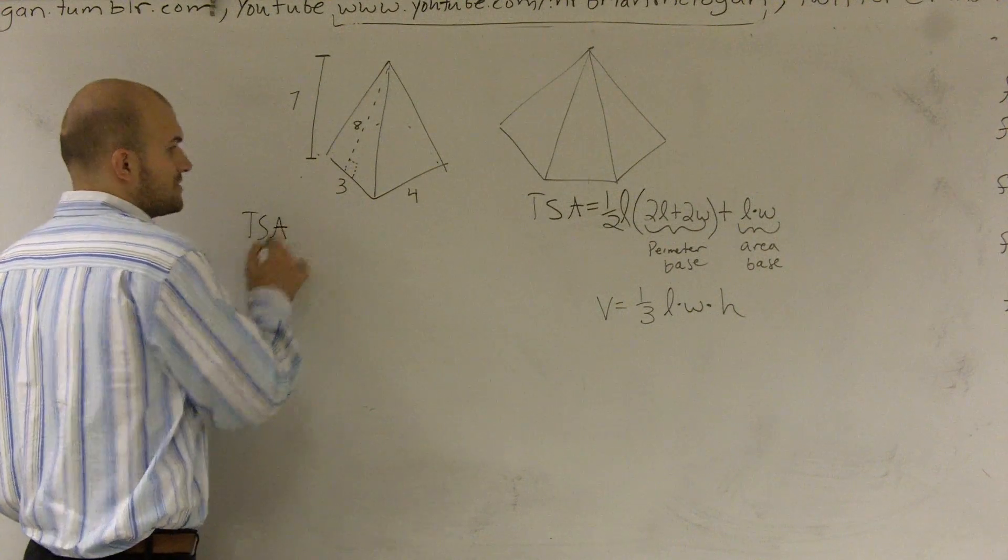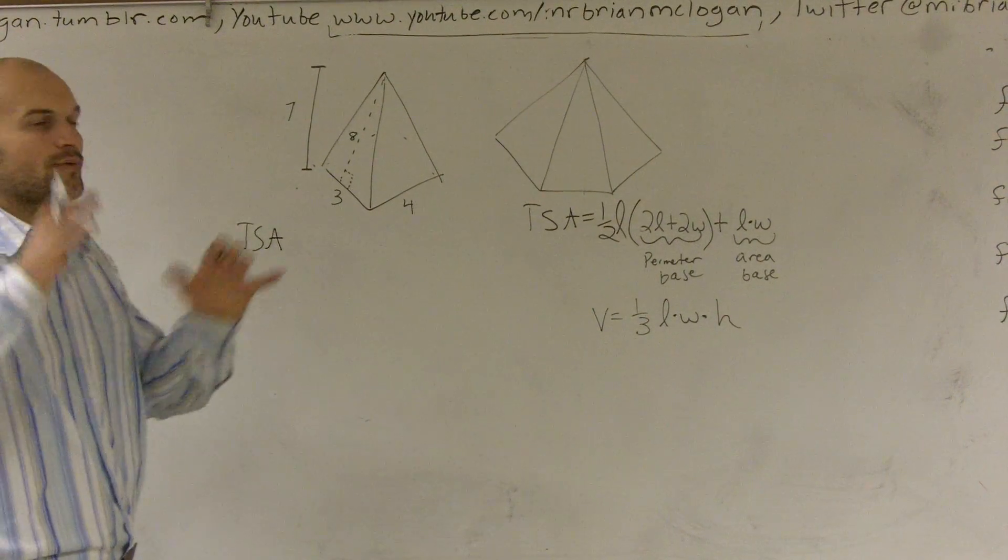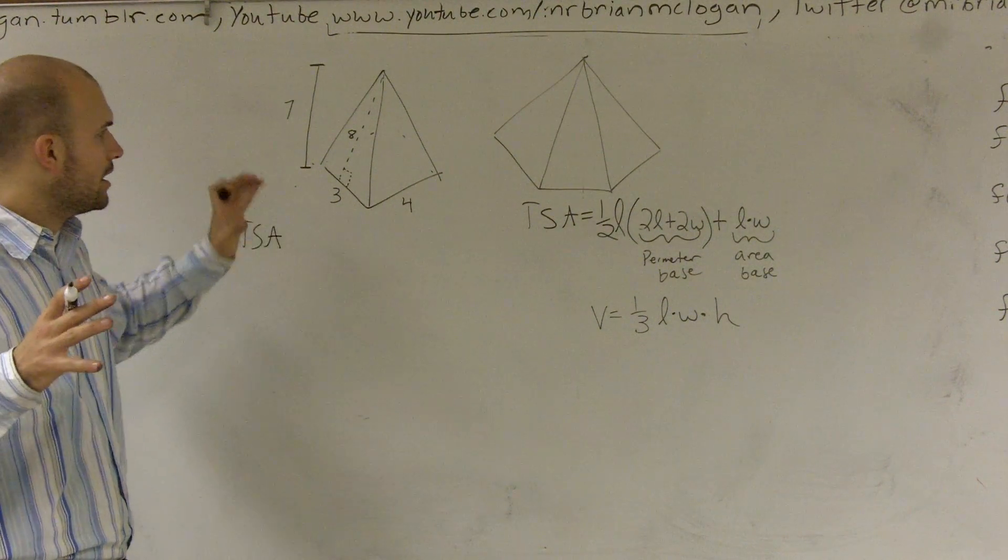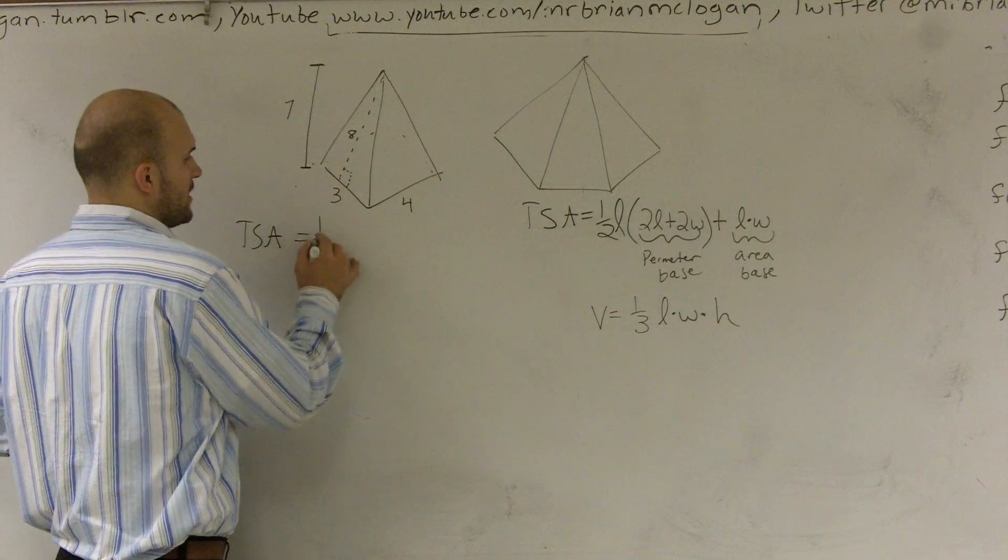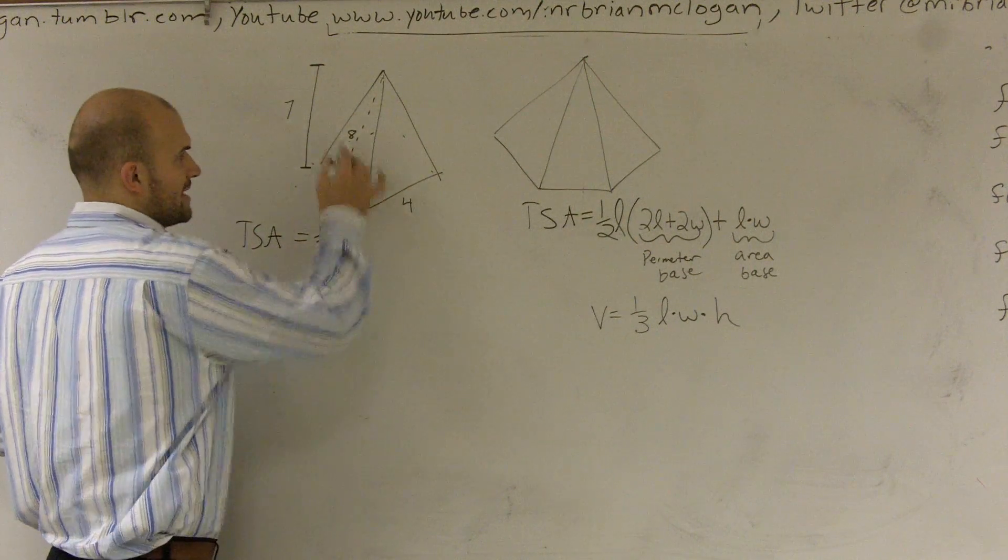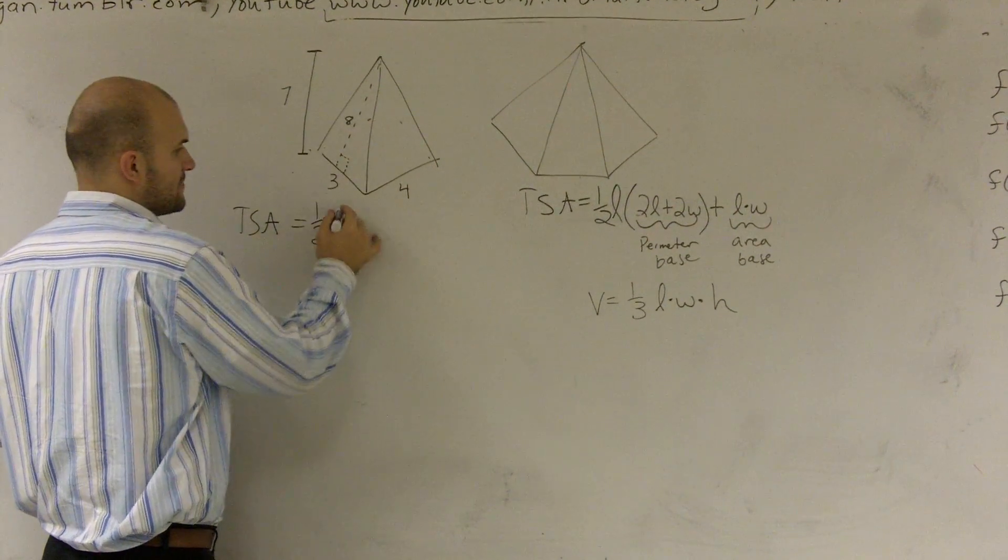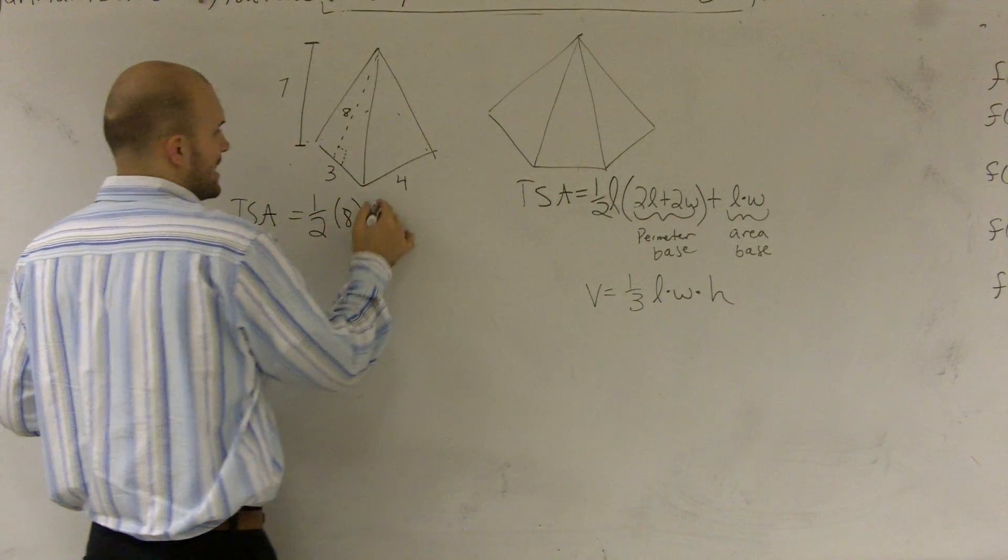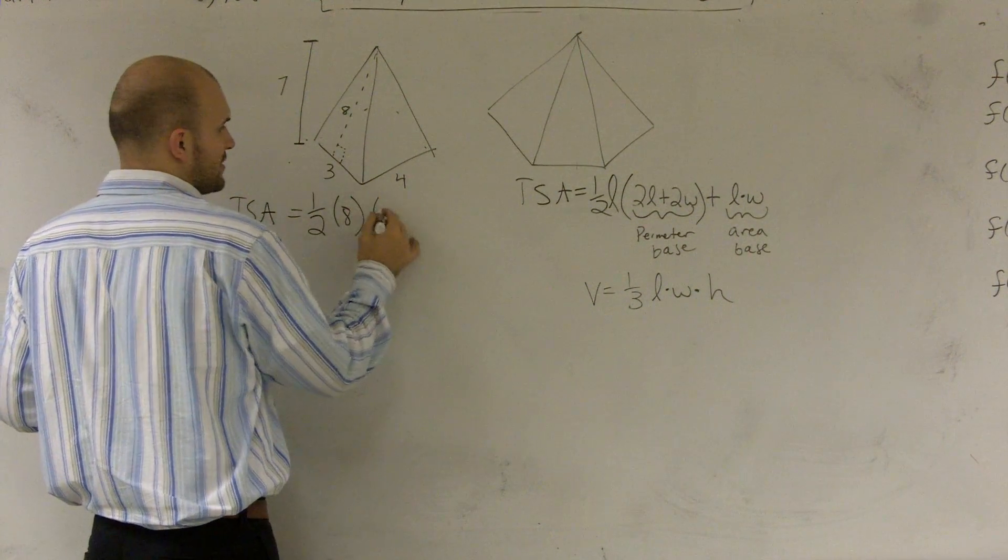So I have my total surface area. Remember, total surface area is the area all the way around that encompasses my whole figure. So total surface area is going to be 1 half times my length, which in this case would be 8, times 2 times length, which would be 6, 2 times 3.